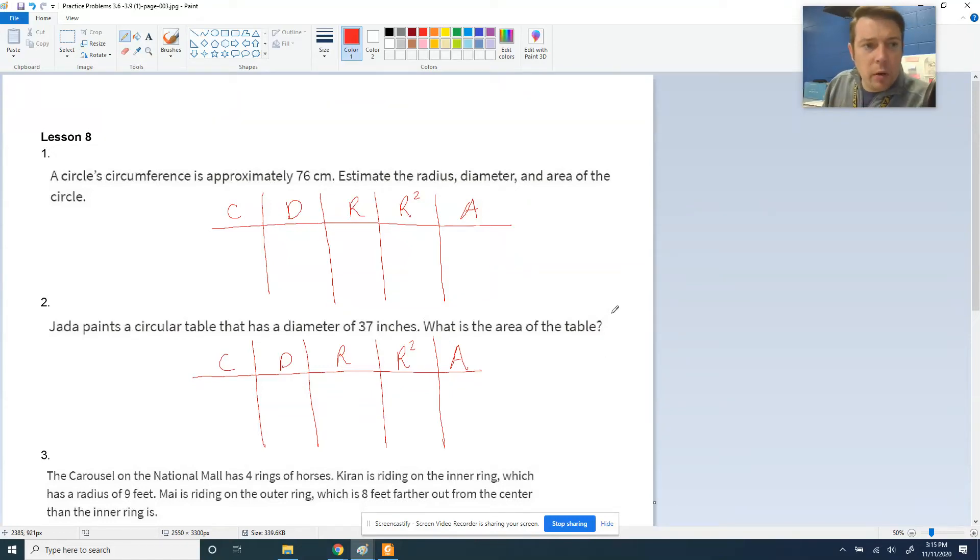Hey guys, Mr. Catlin here with your homework help for Lesson 8. A circle's circumference is approximately 76 centimeters. So I set up a little table here with all of the different aspects of a circle: circumference, diameter, radius, radius squared, area. And I might not have to find all of them, but it's a good way to set up my process for any circle problem.